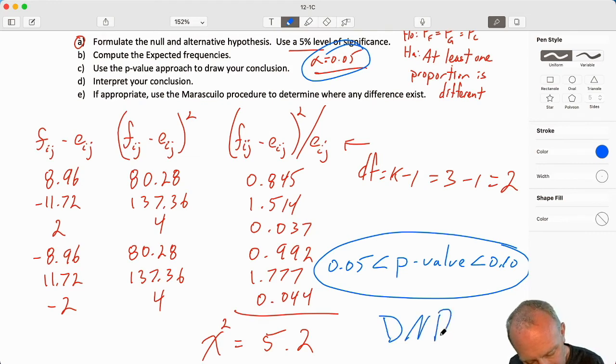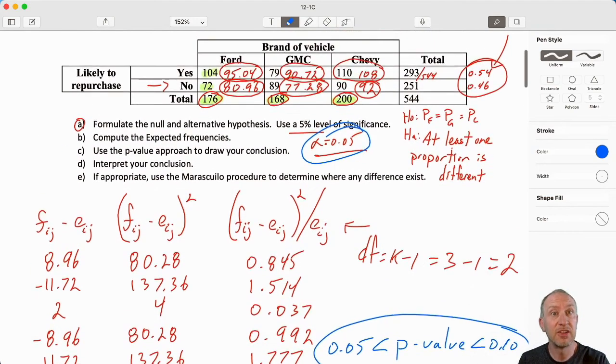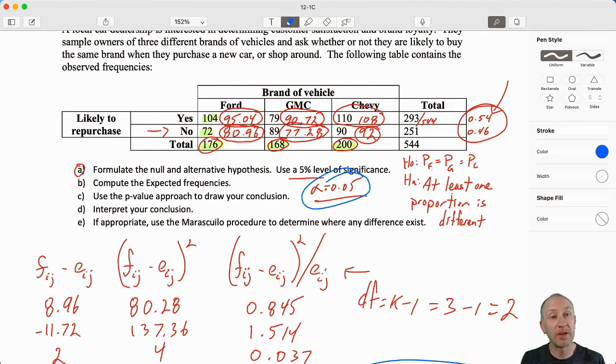So we are unable to reject. We have insufficient evidence to show that any one of these proportions is different from the others. Our evidence here supports the null. We are unable to show that at least one of these proportions is different from the other.